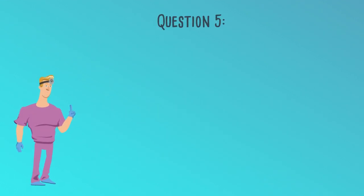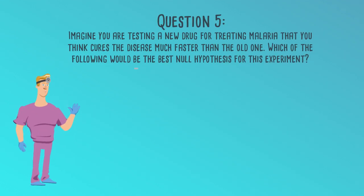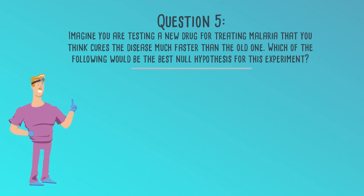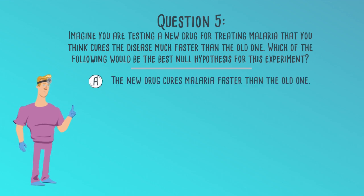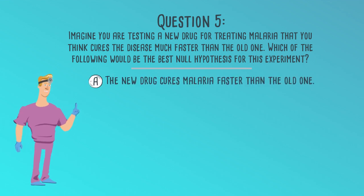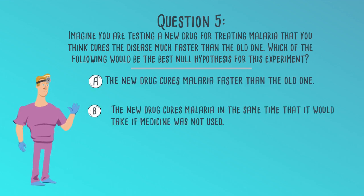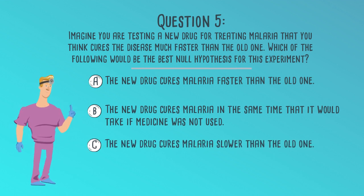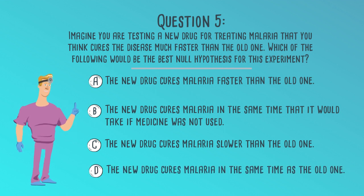Question 5. Imagine you are testing a new drug for treating malaria that you think cures the disease much faster than the old one. Which of the following would be the best null hypothesis for this experiment? A. The new drug cures malaria faster than the old one. B. The new drug cures malaria in the same time that it would take if medicine was not used. C. The new drug cures malaria slower than the old one. Or D. The new drug cures malaria in the same time as the old one.